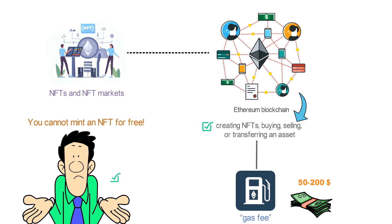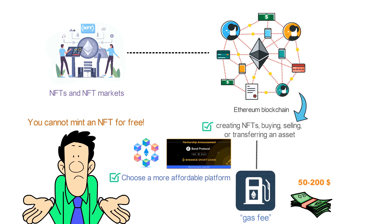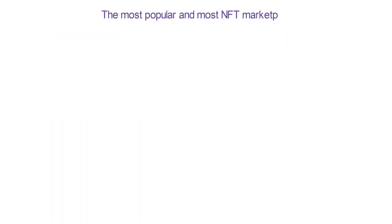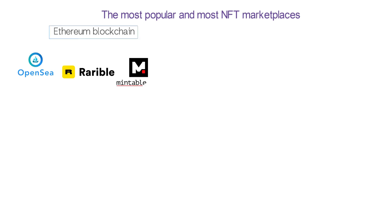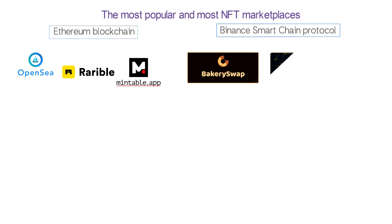What you can do is choose a more affordable platform. Currently, the largest NFT marketplaces are hosted on the Ethereum blockchain and the Binance Smart Chain protocol. The most popular and economical NFT marketplaces on the Ethereum blockchain are OpenSea, Rarible, and Mintable. The most popular marketplaces on the Binance Smart Chain network are BakerySwap, Juggerworld, and Treasure Island.